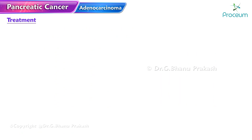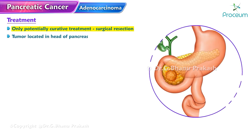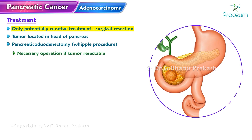The only potentially curative treatment for pancreatic cancer is surgical resection. Because the tumor is most commonly located in the head of the pancreas, a pancreaticoduodenectomy — also known as the Whipple procedure — is the necessary operation if the tumor is resectable.